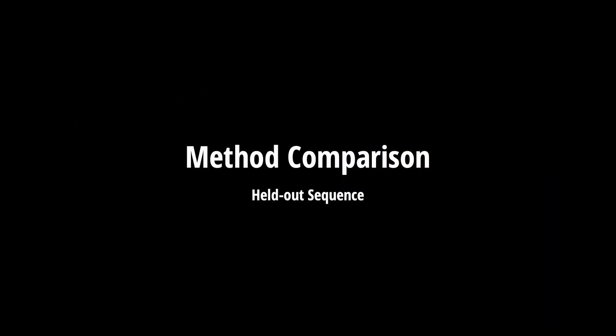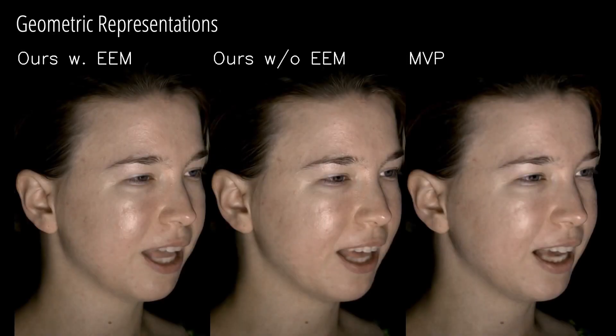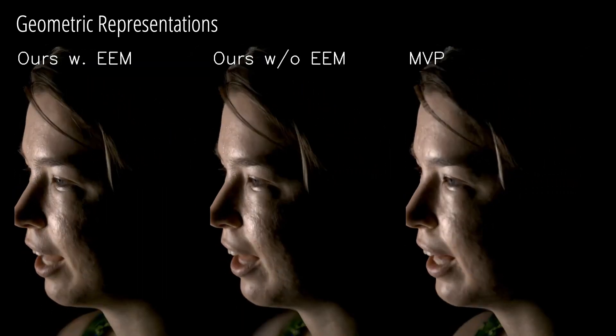In the following, we show comparisons on held-out sequences. Our method shows higher resolution details compared to prior work using mixtures of volumetric primitives, shown on the right. Additionally, our full model with an explicit eye model, shown on the left, recovers higher fidelity glints compared to a model without explicit eye geometry, shown in the middle.